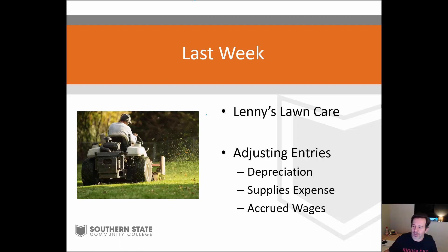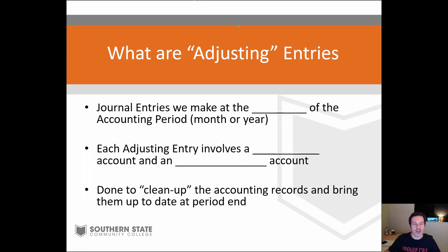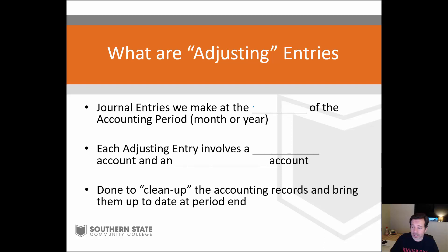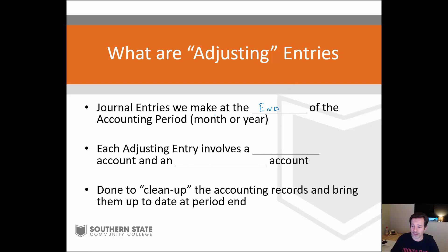We're continuing with Lenny's Lawn Care from chapter seven. Let's do a quick review — pause the video if you want to fill in the blanks yourself. Journal entries made at the end of the accounting period are the adjusting entries. That end of period could be a month, a quarter, or part of the year-end closing process. Every adjusting entry always involves two accounts — the first is a balance sheet account.